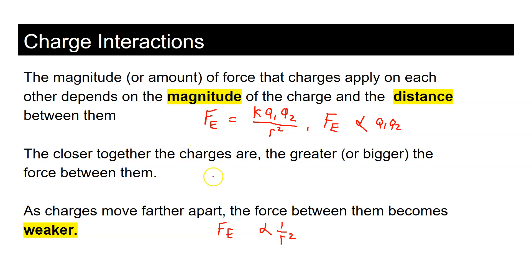Interestingly, this is very similar to the force of gravity: F_g = G × m₁ × m₂ / r². It's a really cool parallel in nature — the electric force between two electrical charges is almost identical in structure to the gravitational force between two objects. Something interesting to think about.